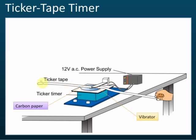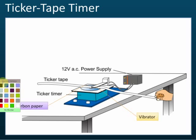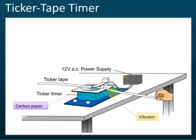This long paper is called the ticker tape. When the pin hits on the paper and the paper hits on the carbon paper, the carbon paper will leave a mark on the ticker tape. If we pull this ticker tape, it will leave a series of marks. The marks on the ticker tape will look something like this — there are dots on the paper.